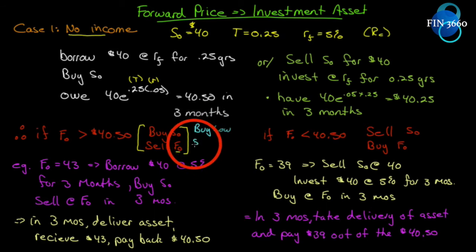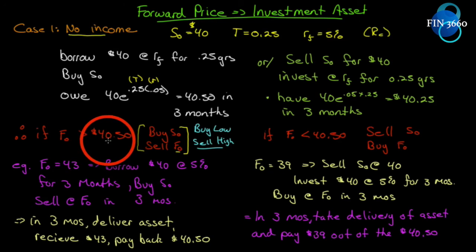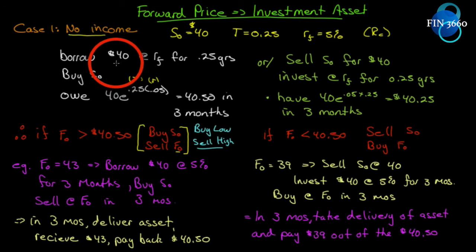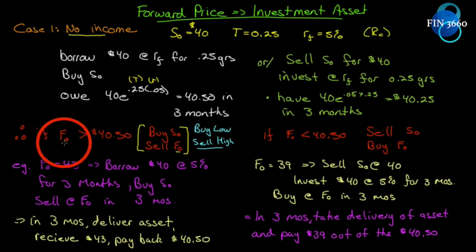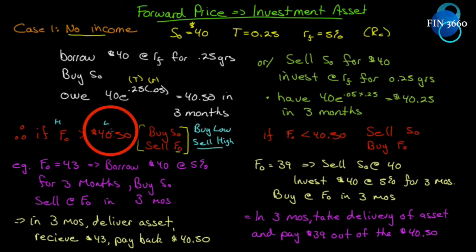Buy low, sell high — that's all you have to remember. If the futures price is greater than the future value of the loan required to buy the spot asset today, then F₀ is the high side and S₀ is the low side. So we buy low — we buy S₀ — and sell high — we sell F₀. That's it: buy low, sell high.